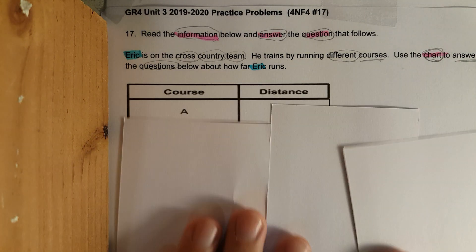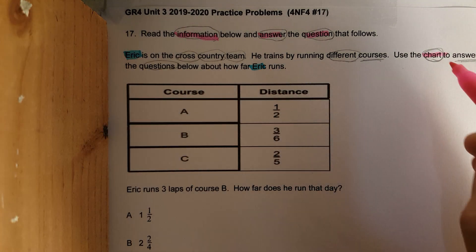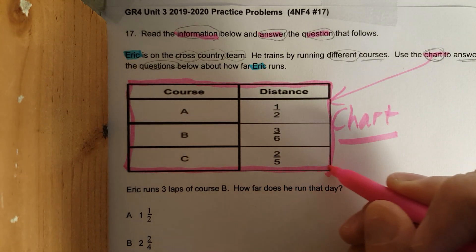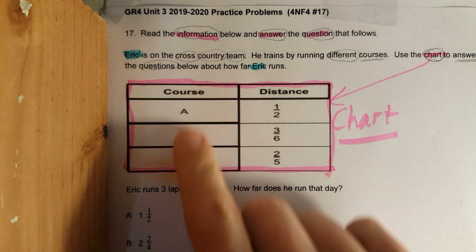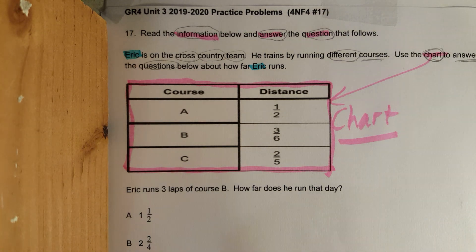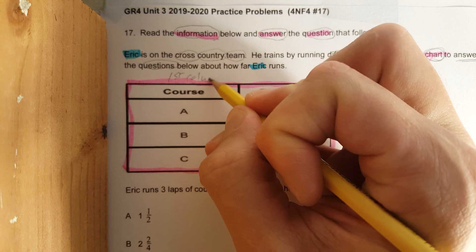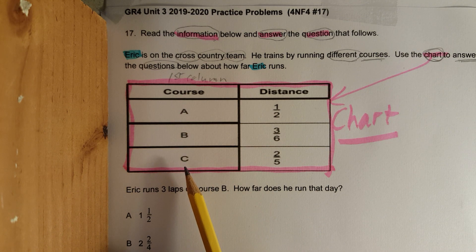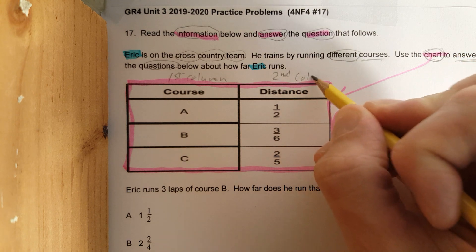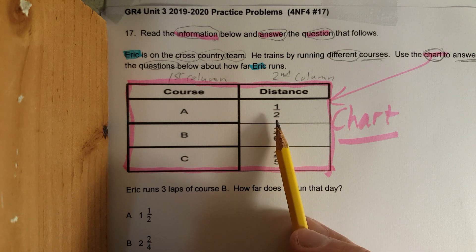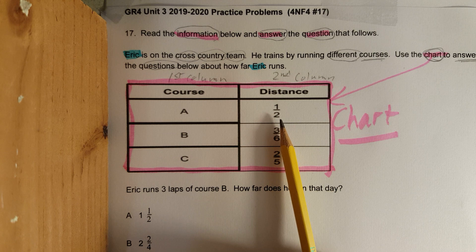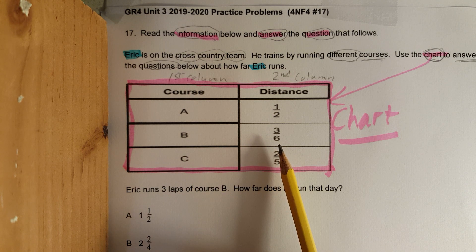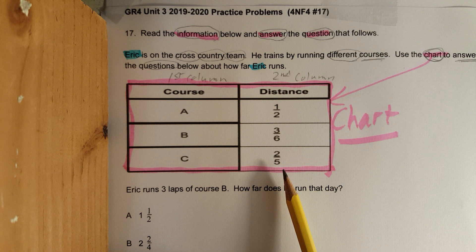All right, now let's check out the info. Okay, still not a lot. This is a chart. Columns, rows. First column, back down, gonna write first column, that means this. It talks about which course he ran: A, B, and C. Second column talks about the distance he ran for each one. For course A, one-half, half a mile. How far? Half a kilometer. For B, three-sixths. C, two-fifths. Okay, remember, each one of these represents a course.